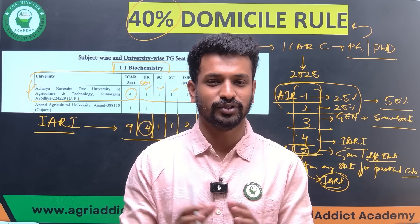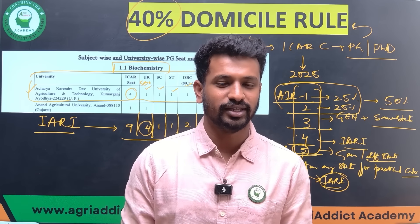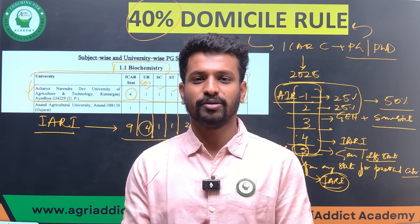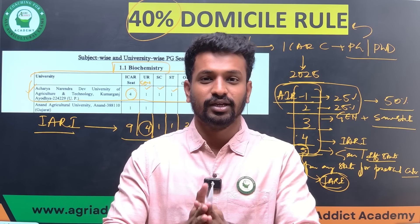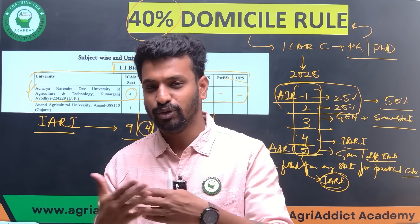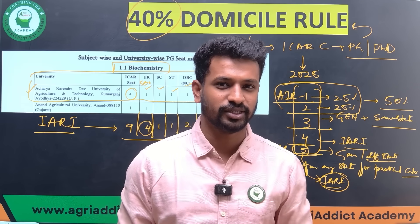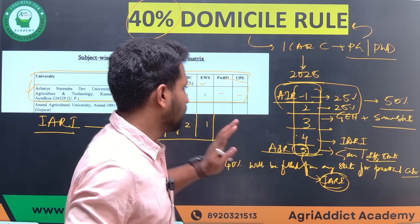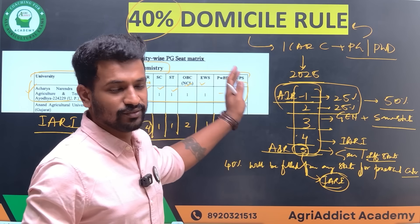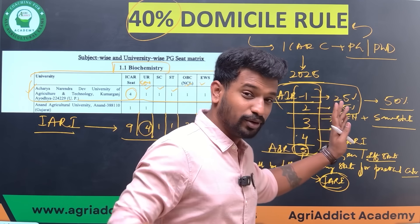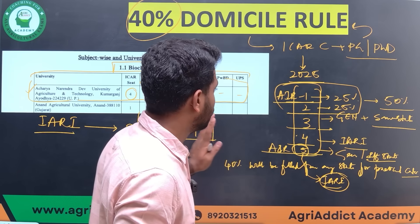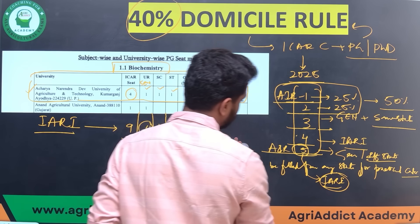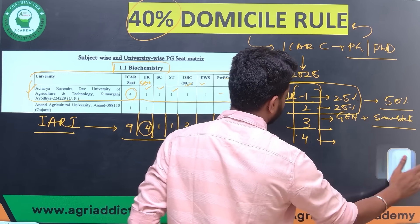This is something many students are unaware of. During option entry, students think: 'I am all-India rank 2 or 3, I will definitely get this department at this university,' and they don't worry about filling other options below it. But you must know this — if the person ranked above you is from the same state and the same category, you will not be able to get that seat because of this domicile rule.